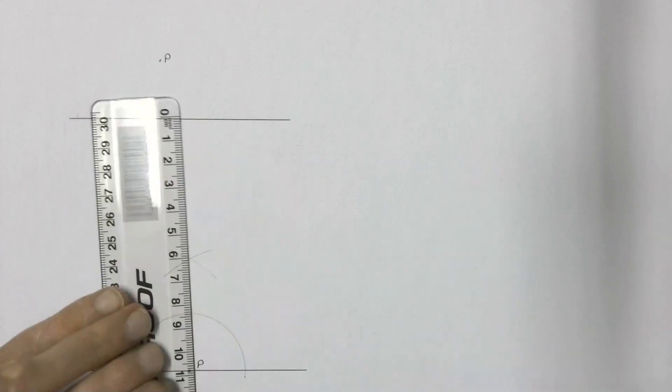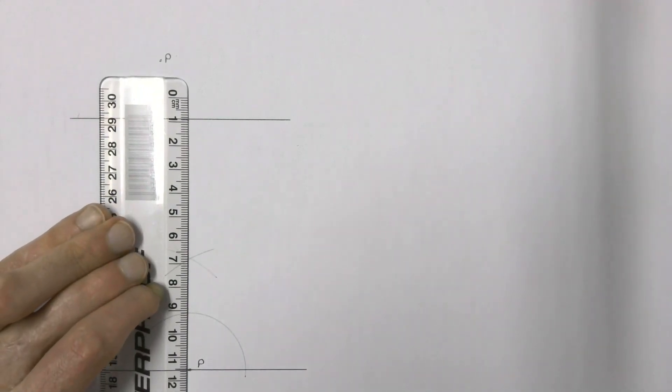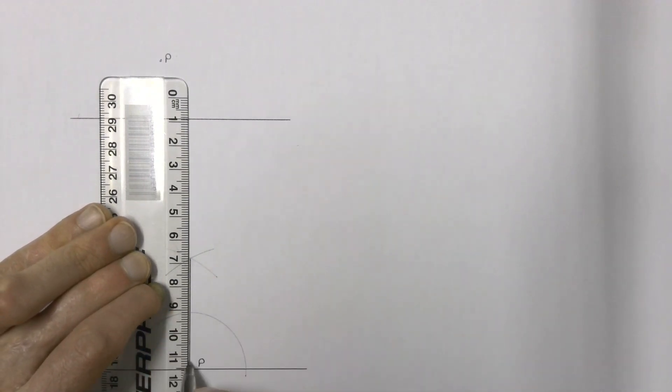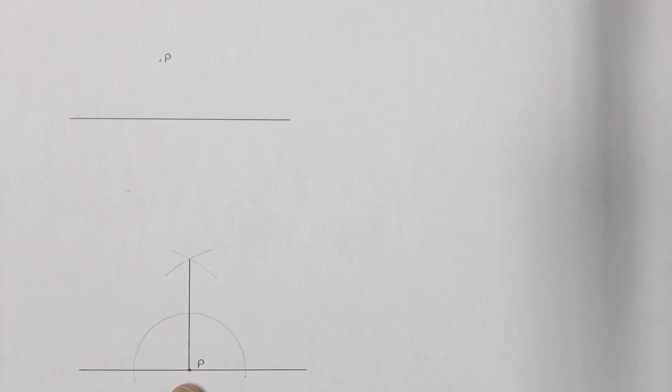If we draw a line from where those two arcs intersected to point P, that line should then be perpendicular to point P.